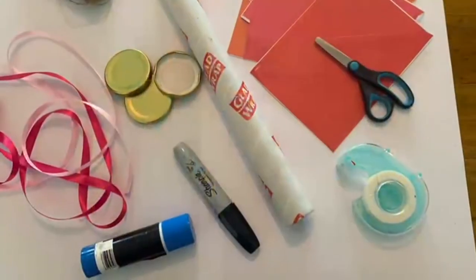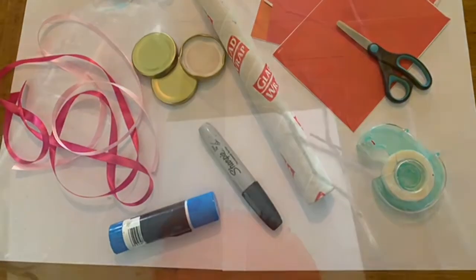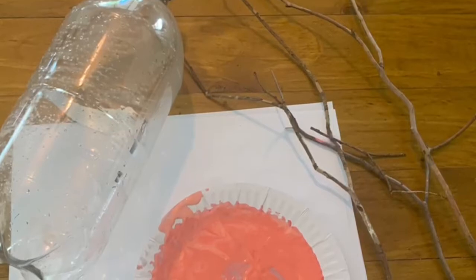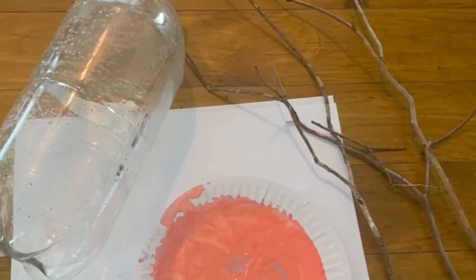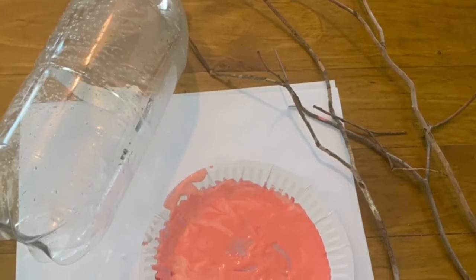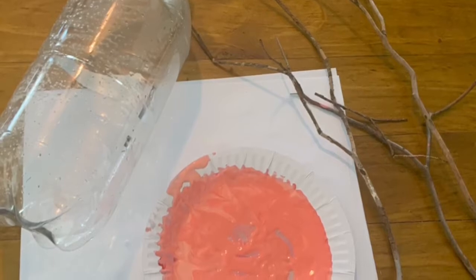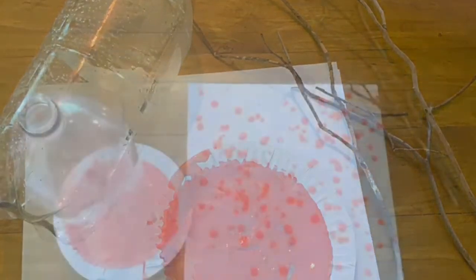For today's craft we're going to use some recyclables and reuse some old materials. First of all we're going to use a bottle, some sticks and some pink paint. Because the Olympics were in Japan this year we're going to make a beautiful cherry blossom tree.